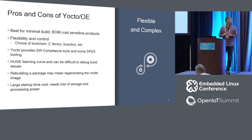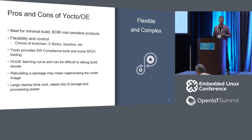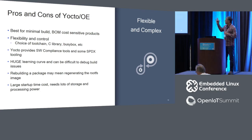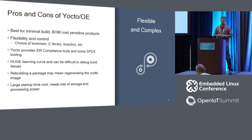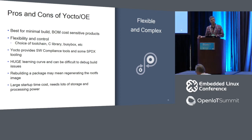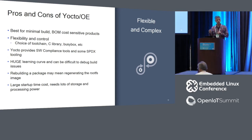One of the big benefits of OpenEmbedded or Yocto is if you're building cost-sensitive products and really need to reduce flash, reduce RAM, reduce BOM cost, and are sensitive to root filesystem image size, this will be better than a typical Debian system. You have flexibility and control — you can decide what build options to enable, build with BusyBox, and choose whatever toolchain you want rather than being limited to what's available in a Debian release.